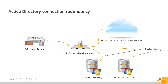Now we consider further redundancy through integration with other infrastructure within the environment. Redundancy for the connection to Active Directory is achieved by configuring multiple connections to Active Directory. If one domain controller should fail or otherwise be unreachable, we can try another one in the same domain.